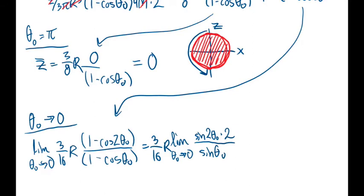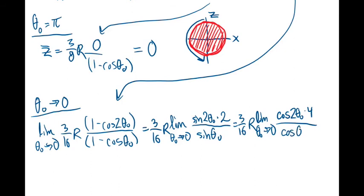Which will be cosine 2 theta naught times 4 over cosine of theta naught. At 0, that equals 3 sixteenths R times 4 over 1, so we get 12 sixteenths or 3 quarters R.